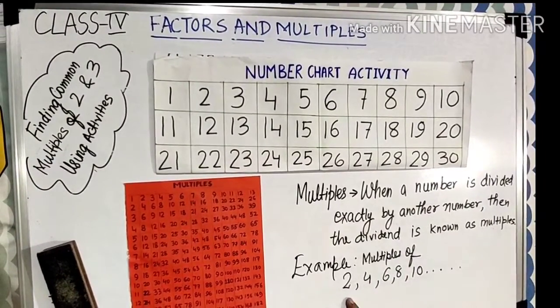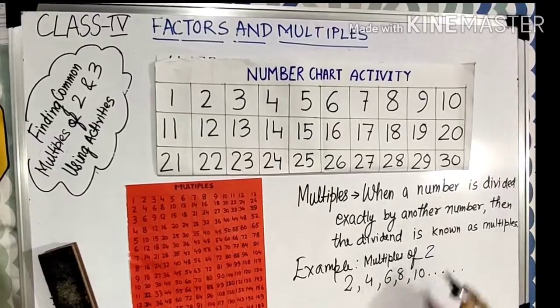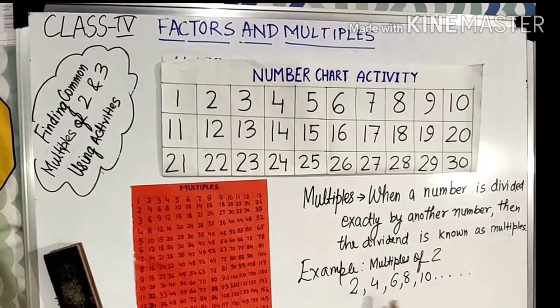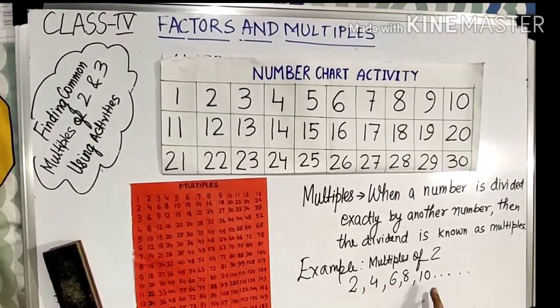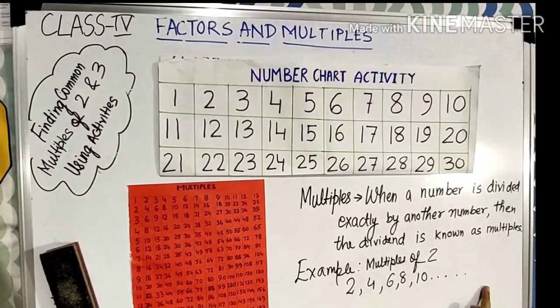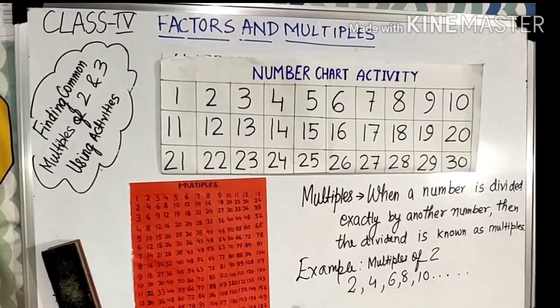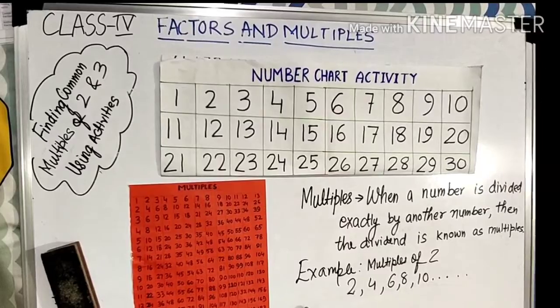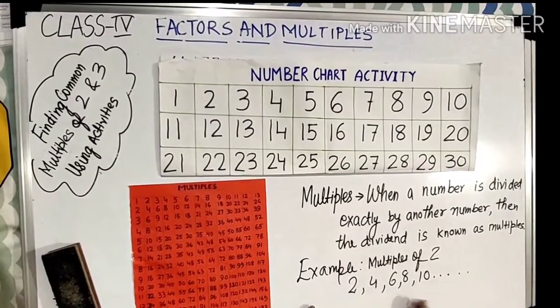What are the multiples of 2? Multiple of 2, 4, 6, 8, 10 and so on. As there is no limit for finding the multiples, they are infinity.